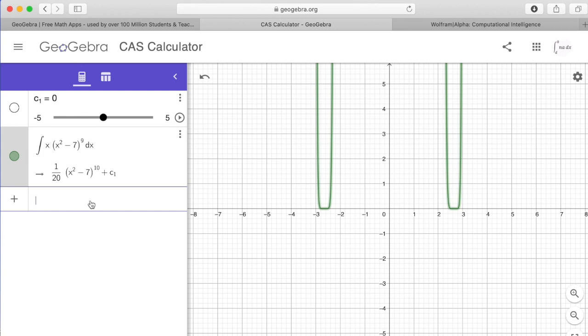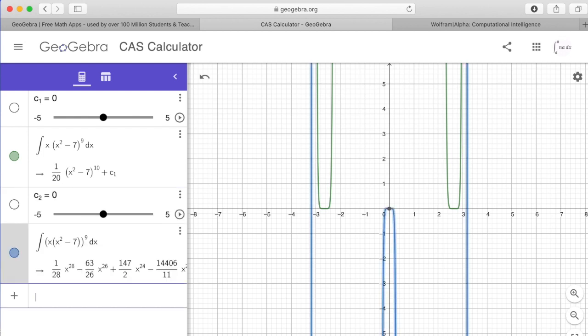Use some caution here. If you type in integral x, parentheses, x squared, minus 7, and then up here go to the ninth power, it will actually, for some reason, move the exponent to the exterior of both of them. So I often avoid using just the straight CAS calculator in favor of the one found in GeoGebra Classic.